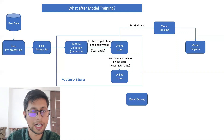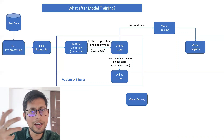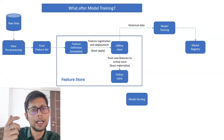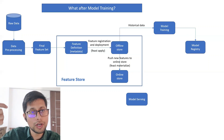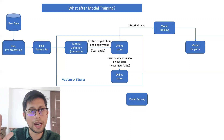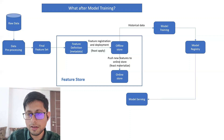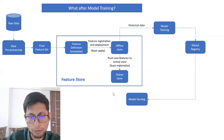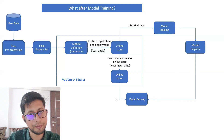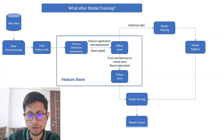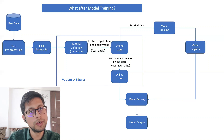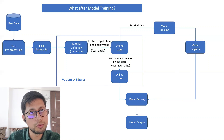Model serving is a fancy name for something simple: it takes a model as input, takes new data as input, and produces a model output. The model serving component reads the model from the model registry and reads new data from the online store, then starts producing output. Once you have the output, there are two aspects: you can directly attach a consumer to start consuming the output, or you can first save the model output.